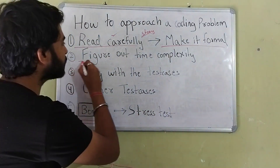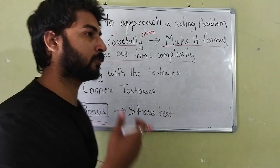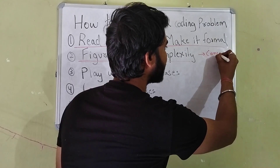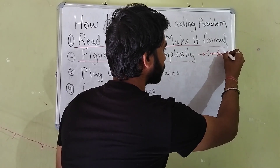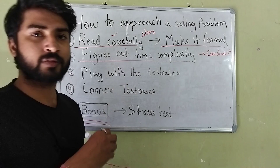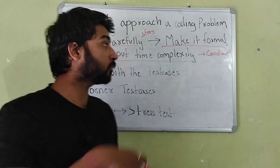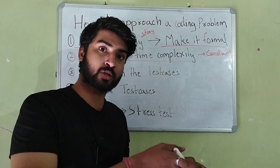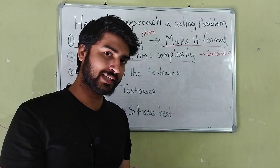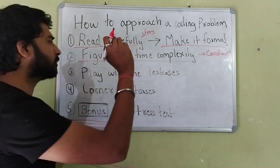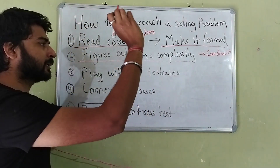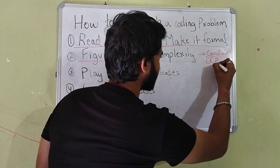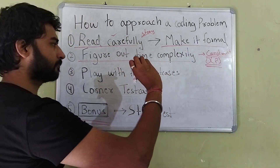The next step is to figure out the time complexity required to solve the problem, and for that you need to focus on the constraints. A lot of people make this mistake: suppose the permissible time complexity is O(n) and you don't focus on the constraints, you jump to an O(n²) solution — that's going to bring you a TLE and waste your time. So just after reading the problem, figure out the permissible time complexity by looking at the constraints.